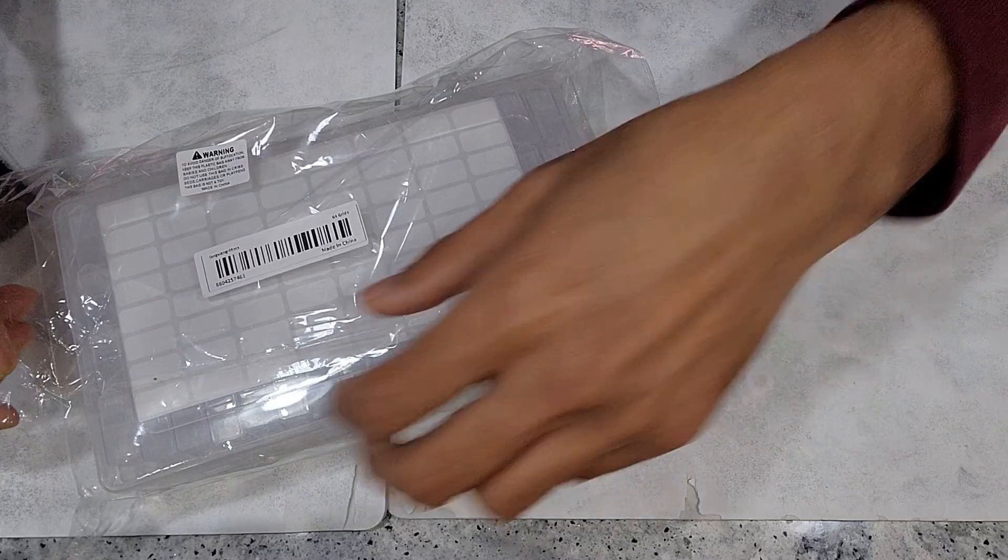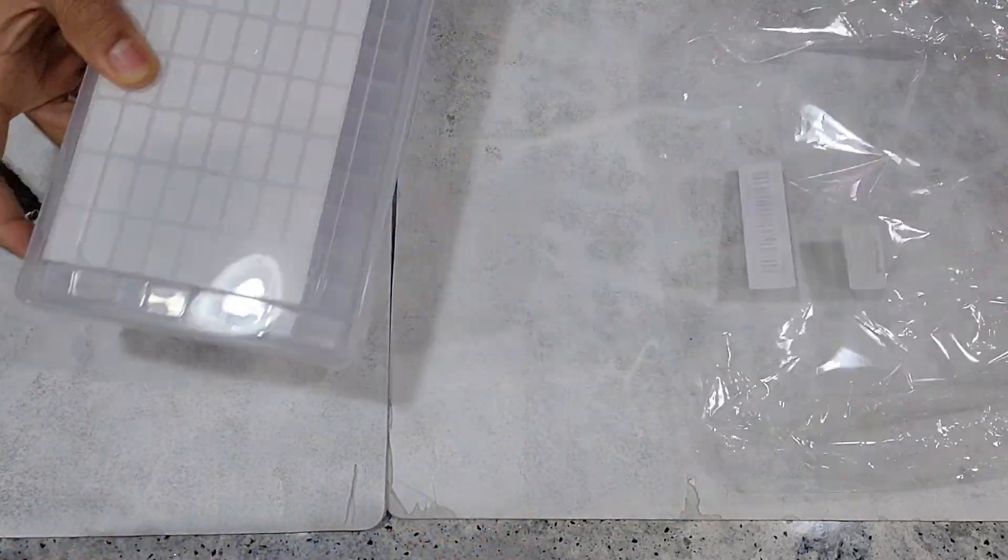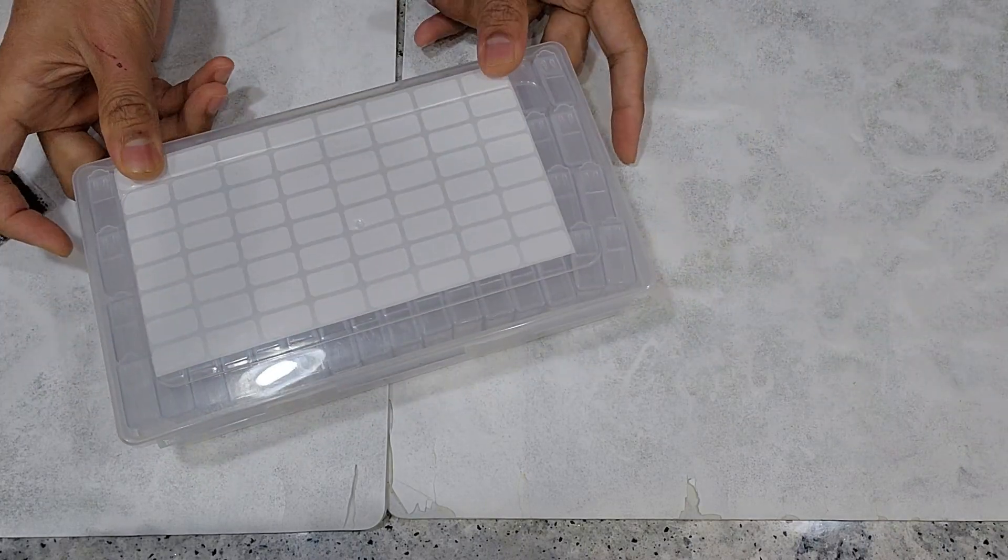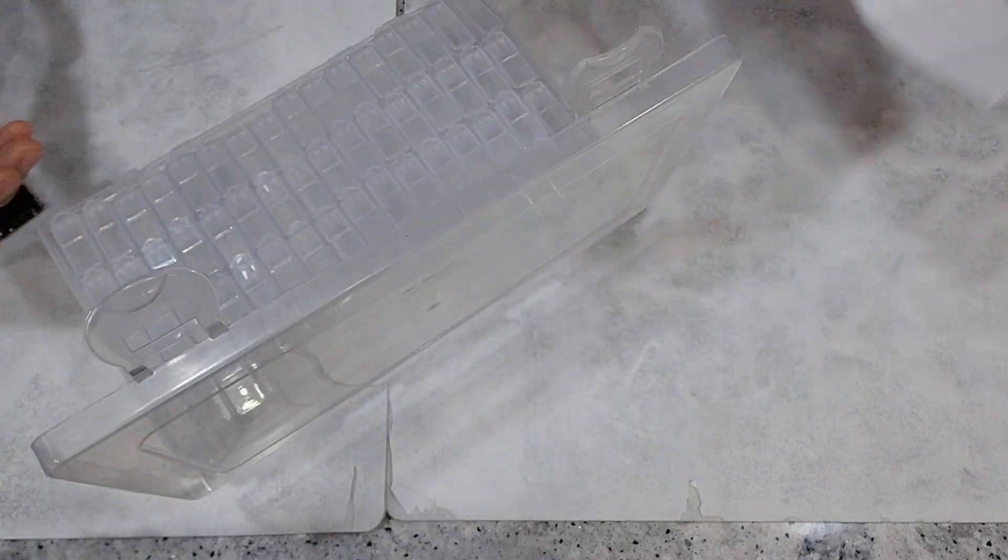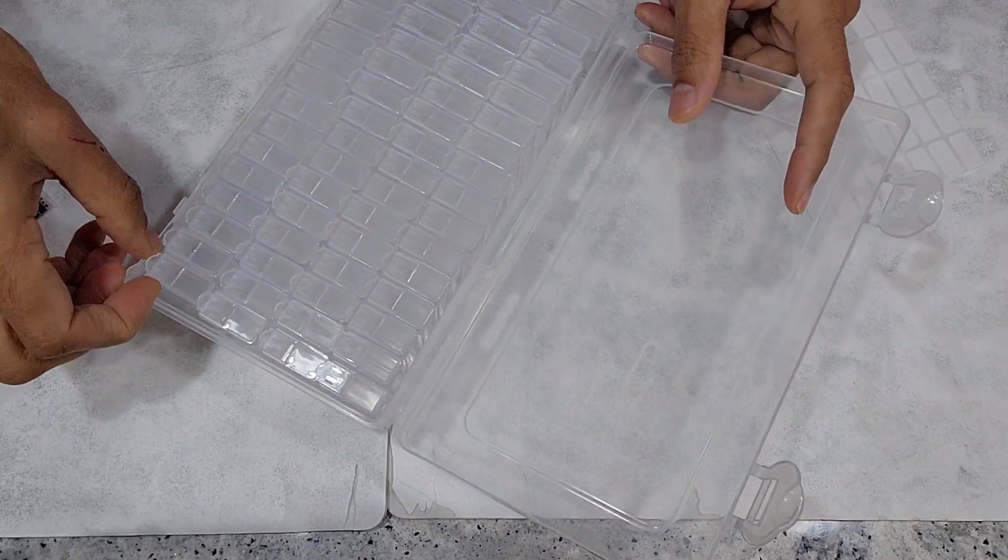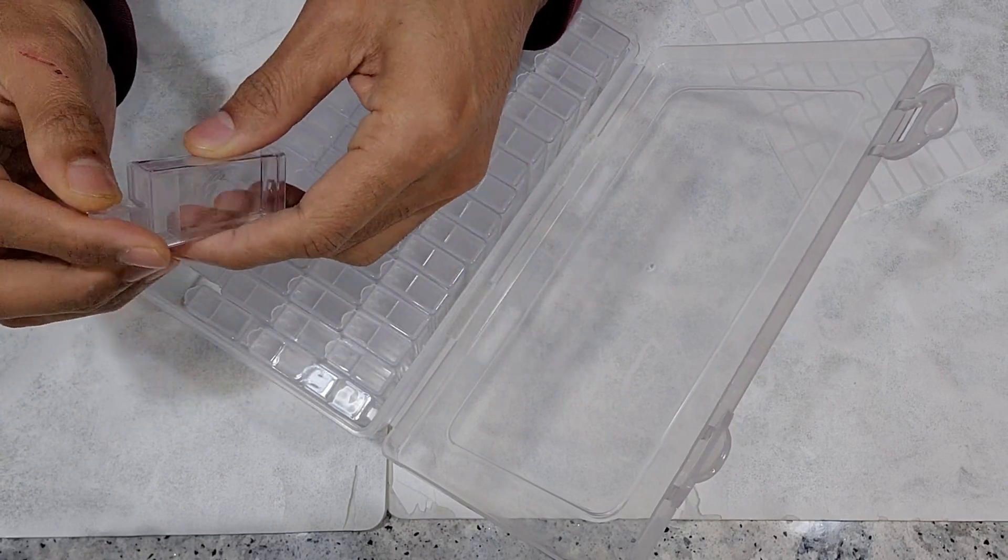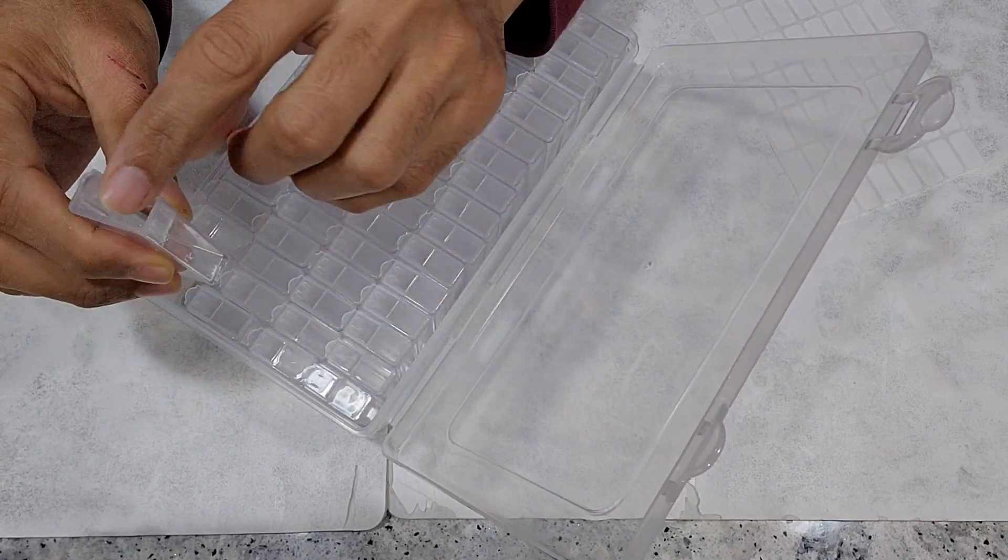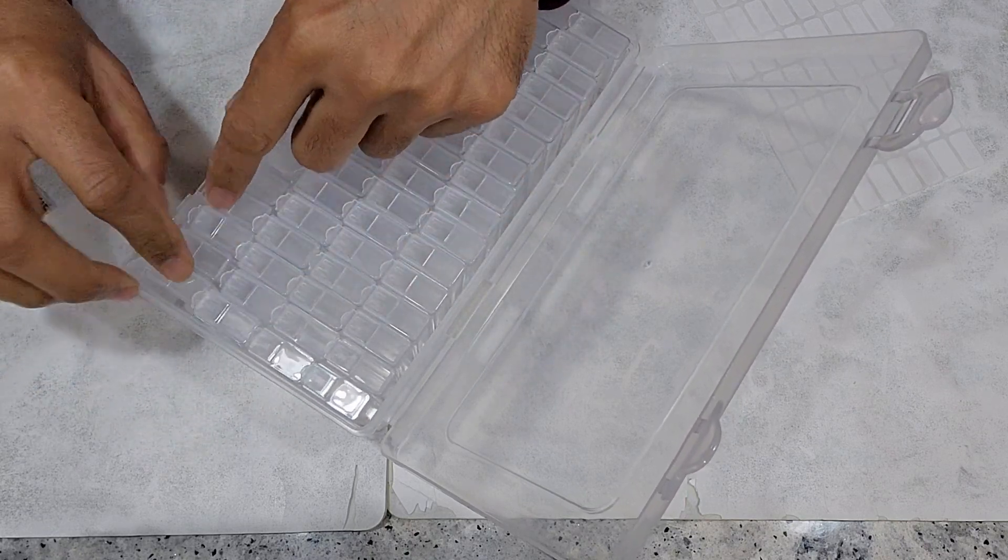So I just got it. I want to show you how it works and how it is going to change my seed organizing. It comes with these labels and there are 64 small boxes. I think this is exactly what I want. It has a nice opening so I can drop the seeds and seal it well, put it back.